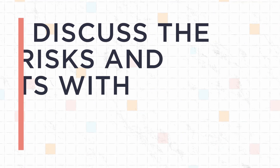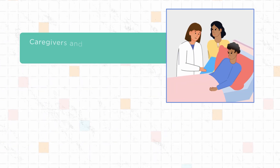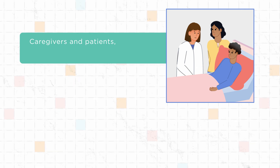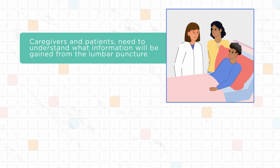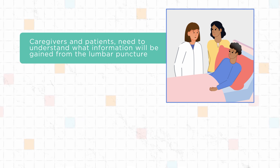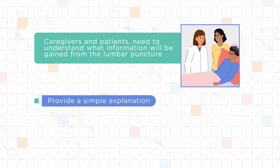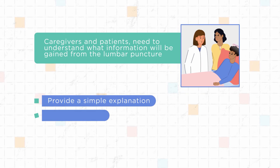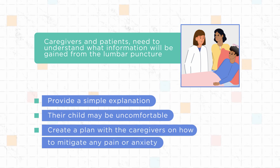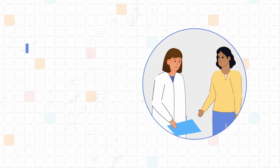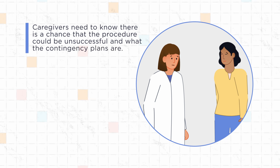Let's plan a discussion with caregivers regarding a lumbar puncture. Caregivers and patients, depending on the child's developmental stage, need to understand what information will be gained from the lumbar puncture and how that information will help in making decisions or a diagnosis for their child. Provide a simple explanation and let them know that positioning for the procedure may make their child uncomfortable. Create a plan with the caregivers on how to mitigate any pain or anxiety. Caregivers need to know there is a chance the procedure could be unsuccessful and what the contingency plans are.